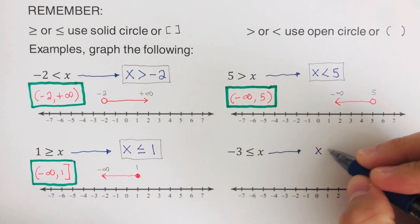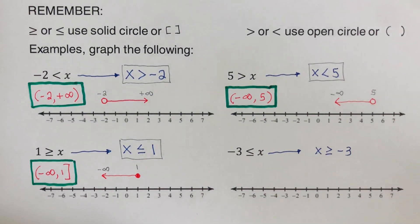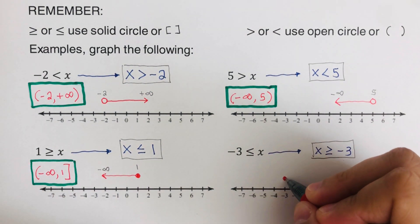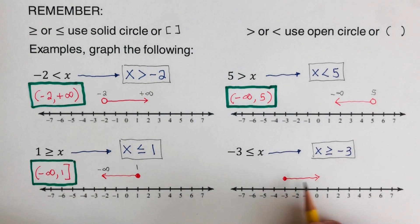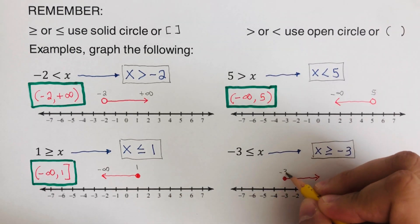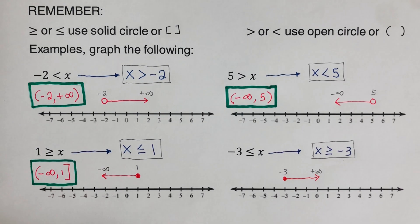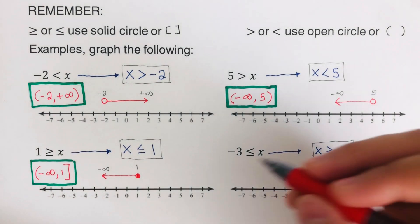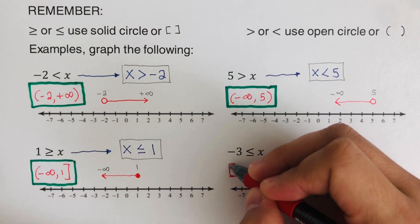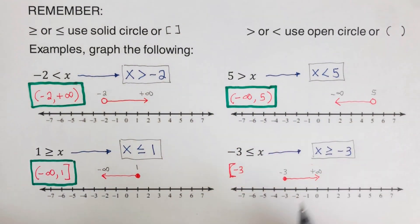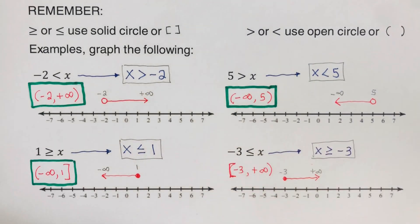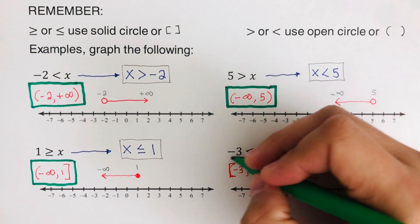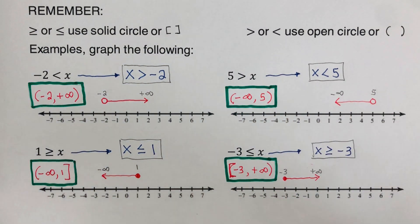For the next one, we rewrite the equivalent inequality as x ≥ -3. We graph a closed circle on negative 3, and the arrow goes to the right. The endpoints are negative 3 going all the way to positive infinity. In interval notation, we use a bracket on negative 3 since it's a closed circle, giving [-3, +∞). This is our solution in interval notation and graph form.